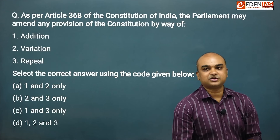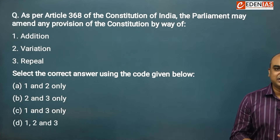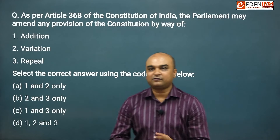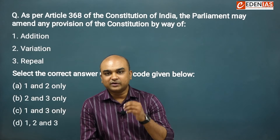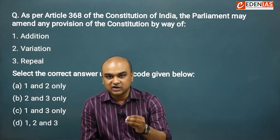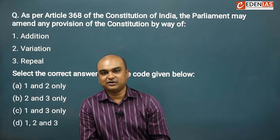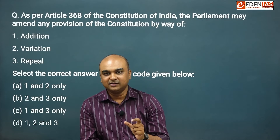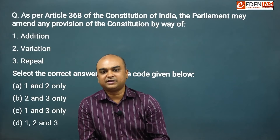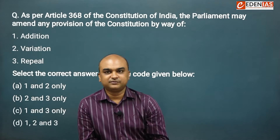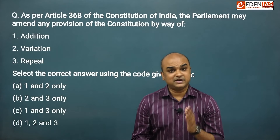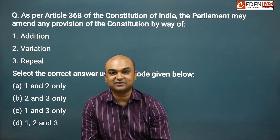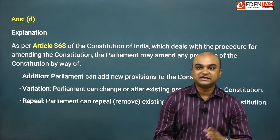Next question: as per Article 368 of the Constitution of India, the Parliament may amend any provision of the Constitution by way of addition, variation, or repeal. Options: 1 and 2 only; 2 and 3 only; 1 and 3 only; 1, 2 and 3. Amendment means you can add new articles or words to an existing article, change the nature of the text (variation), or simply delete a particular article or clause (repeal). All three things can be done through an amendment, provided you follow the procedure prescribed under Article 368 and do not violate the basic structure of the Constitution. The right answer was D.